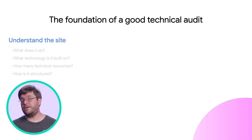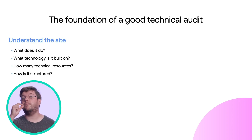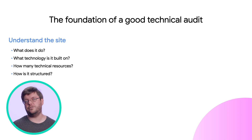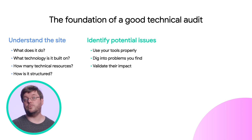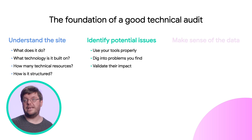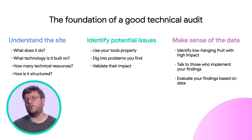We first need to understand the site, then find potential problems, and then give reasonable recommendations. Going a bit deeper, we need to figure out how the site works on a technology level, then use our tools properly to identify issues that affect this technology basis, then group our findings according to the amount of effort and impact a fix will have. It also helps a lot to talk to the people familiar with the site and its technology to figure out if your evaluation makes sense for them.